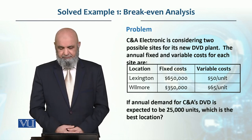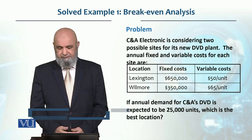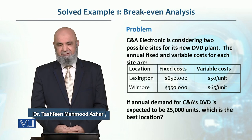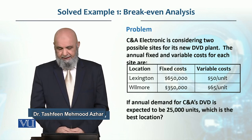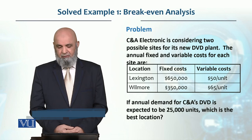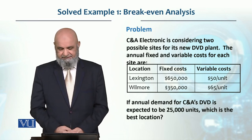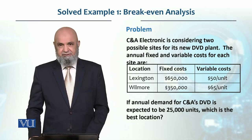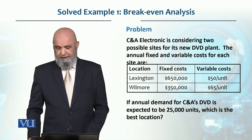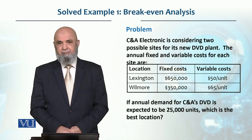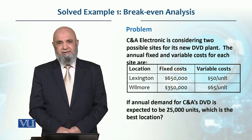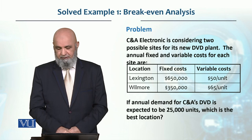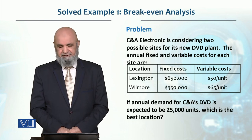The problem statement is: there is a C&A Electronics considering two possible sites for its new DVD plant. The annual fixed cost and variable cost for each site are given as: Location Lexington has a fixed cost of $650,000 and a variable cost of $50 per unit, and Wilmore has a fixed cost of $350,000 and a variable cost of $65 per unit.